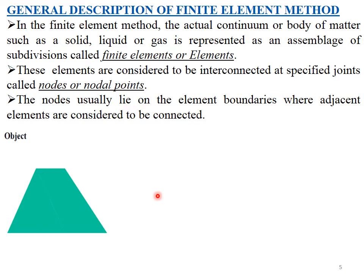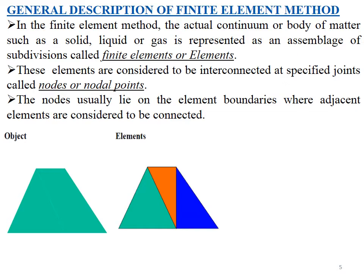Let us consider a simple object as an example. First, we divide or discretize it into different parts called elements — let us say three elements, shown with three different colors for representation. These elements have to be connected by nodes or nodal points. The nodes are shown as the points where the elements meet and are connected.